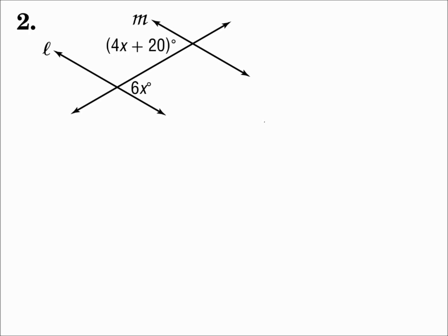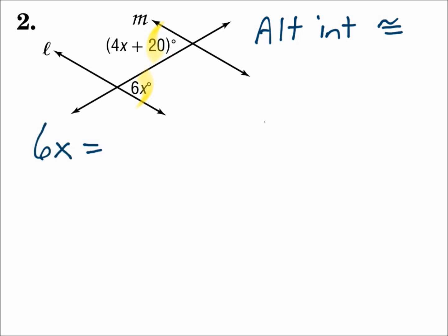Number two. We're given these angle measures, and those angles are opposite corners inside the two lines — those are alternate interior angles. The rule says if alternate interior angles are congruent, then the lines are parallel. So for them to be congruent, let's make them equal each other: 6X equals 4X plus 20.